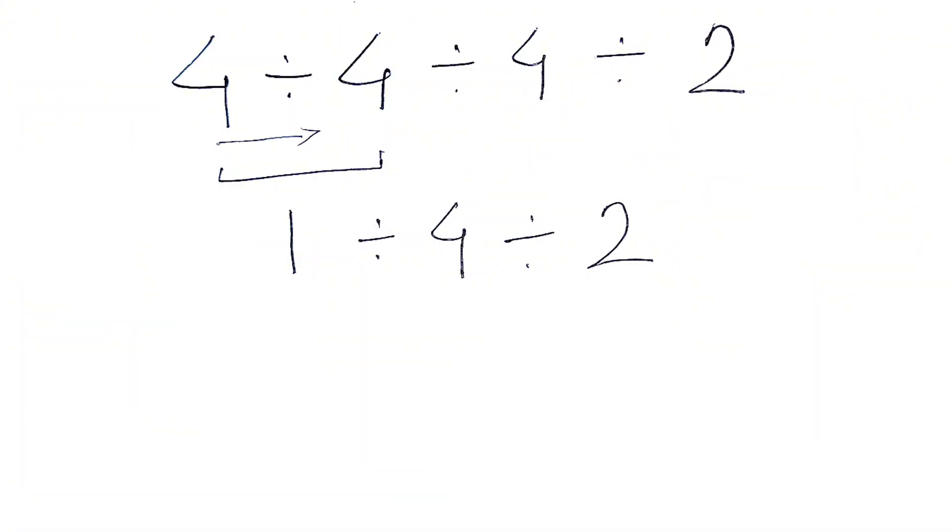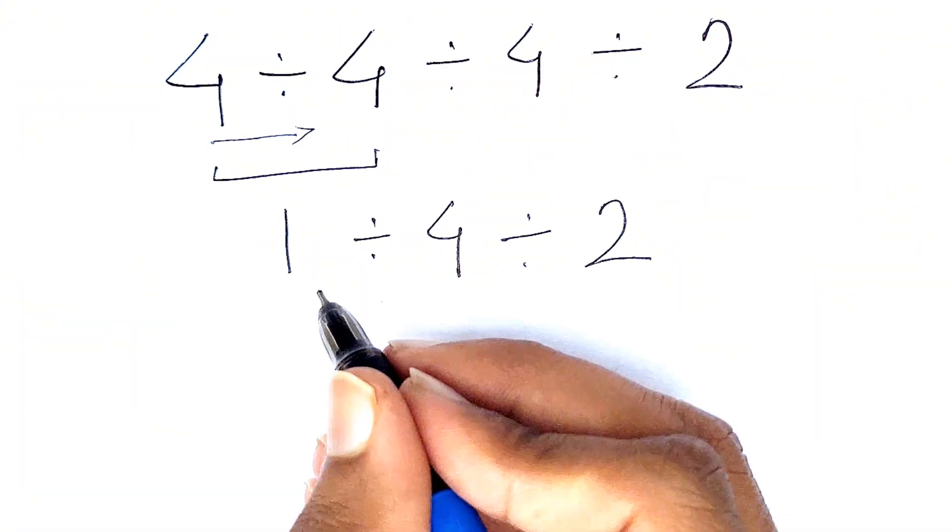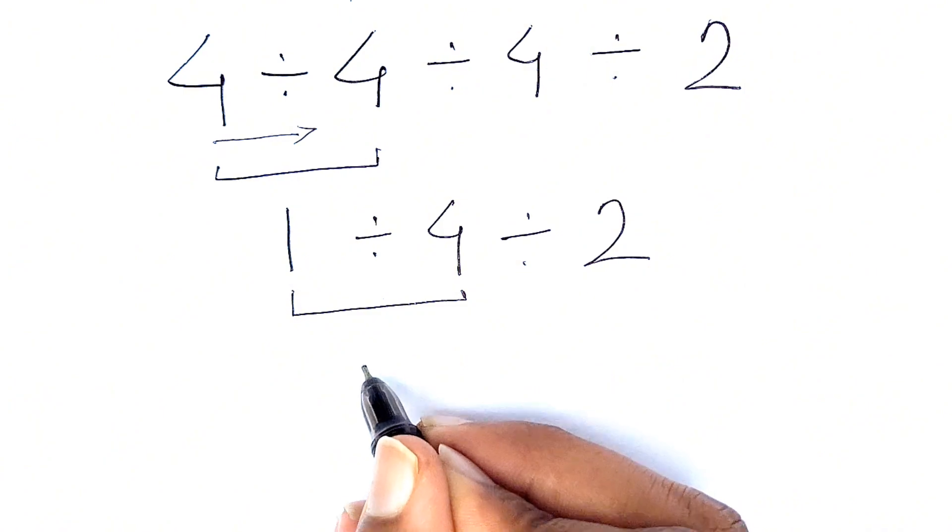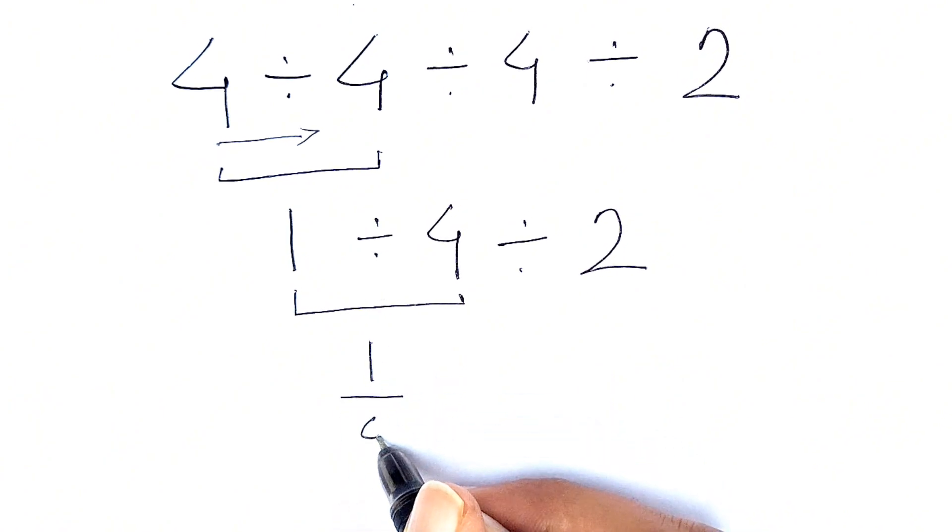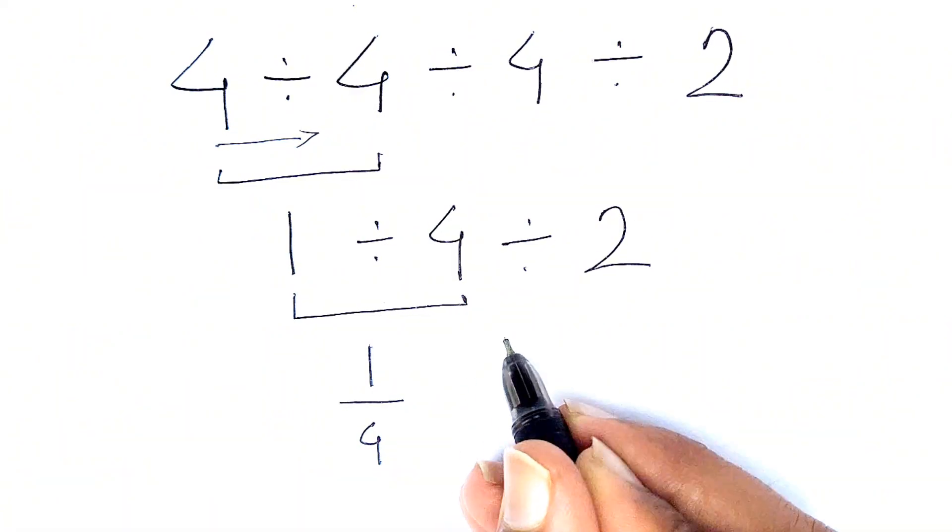Now here again we need to solve this 1 divided by 4. 1 divided by 4 can also be written as 1 over 4, and we'll write this remaining 2 as it is.